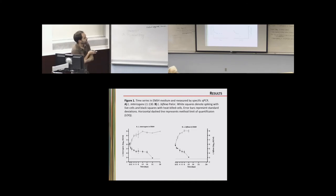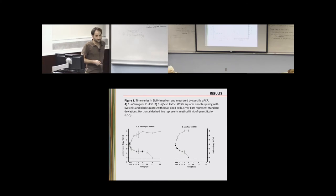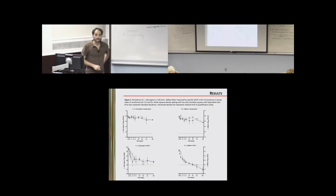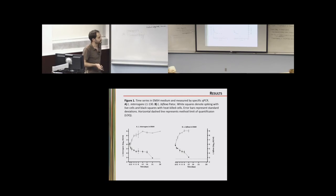For the EMJH medium control, you would expect a typical growth curve. We inoculated the microcosms with both live cells and dead cells. Live cells grew up to saturation point, and Leptospira biflexa as well, while the dead cell qPCR signal dropped off. This is just a control to show that the cells we were inoculating were viable and able to survive. Since this is qPCR, we're not really assessing production of new Leptospira but rather the accumulation of DNA in our environment.